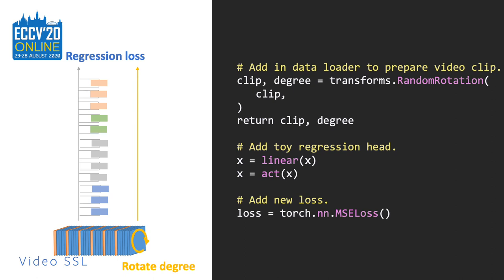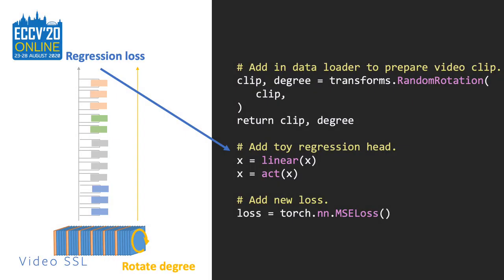To make PySlowFast support a rotation-based sign for self-supervised learning, there are only three things you need to do. First, simply add an additional transformation to rotate the video frames, as shown in the code on the right side. Second, implement the head for regression to the degree of rotation — a simple linear layer with proper activation is enough. Third, write the corresponding loss layer for the rotation-based task.